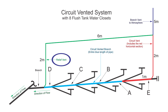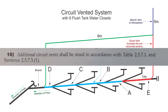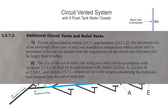Now we need to size the relief vent. Unfortunately, going through the clauses in 2-5-3-1 under the circuit venting section, it doesn't tell us how. The closest thing we get is clause 10, which says additional circuit vents shall be sized in accordance with table 2-5-7-1 and sentence 2-5-7-3-1. Clause 2-5-7-3 is entitled 'additional circuit vents and relief vents' — so we'd better use that.